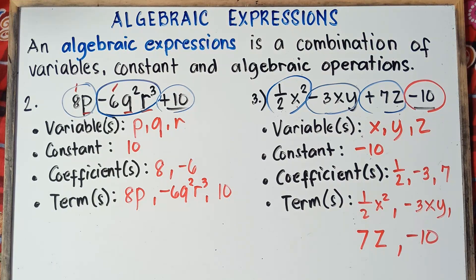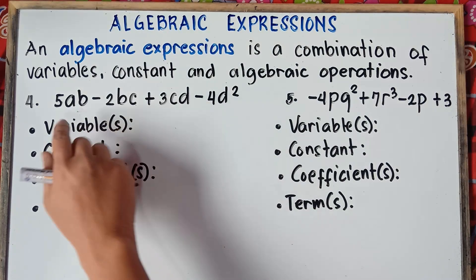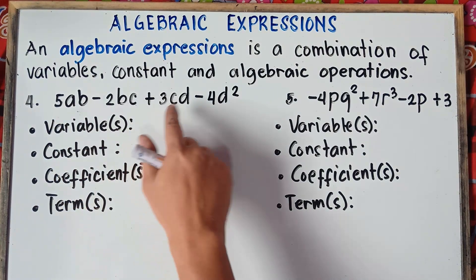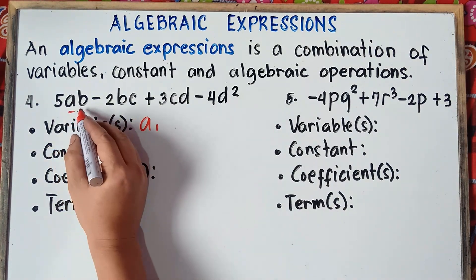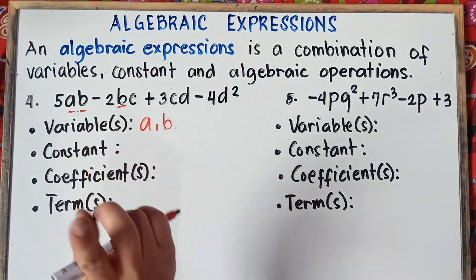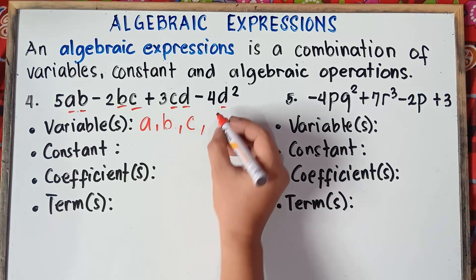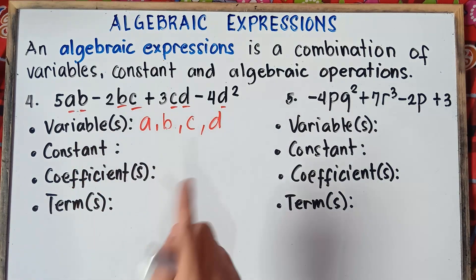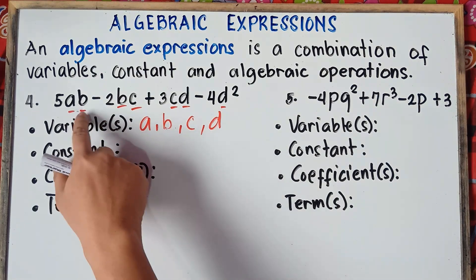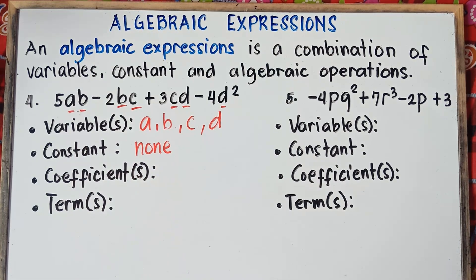Let's have example number 4. Our given algebraic expression is 5ab minus 2bc plus 3cd minus 4d squared. Variables are: a, b, c, and d — if a letter appears twice, count it as one. For constant — the number alone without a variable — we don't have one here, so write none.